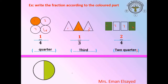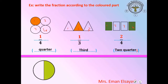Now, if I have a pizza divided into 2 parts, what is the fraction of the shaded part? One over two. The number 1 on top is called the numerator — repeat after me: numerator. This line in the middle is called the fraction bar. And the number below is called the denominator — repeat after me: denominator.